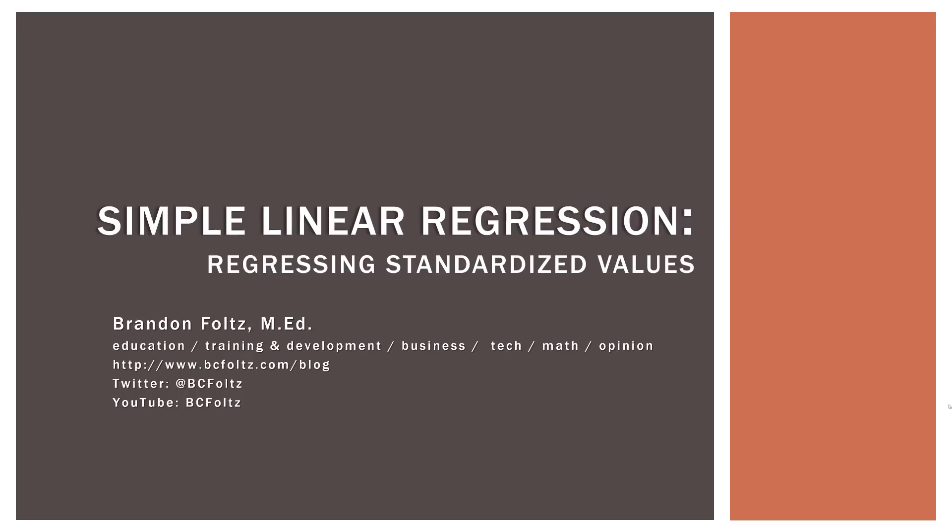So this video is the next in my series on simple linear regression. And what we're going to look at in this video is what happens when we perform linear regression on observations or data that we have standardized. You should remember what that is back from when we were talking about z-scores. So when we regress standardized values, some interesting things become apparent that are happening under the hood and I think they're pretty interesting.